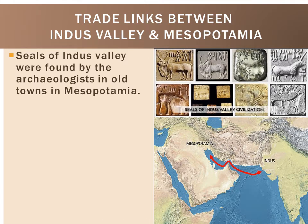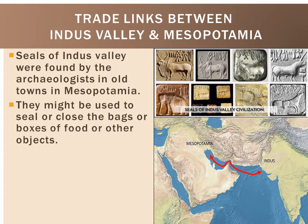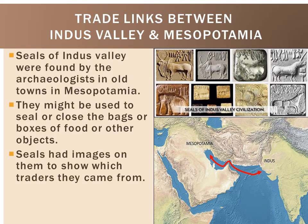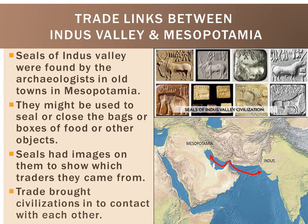Here you can see seals found by archaeologists in old towns in Mesopotamia. These seals were used to close the bags or boxes of food or other objects. The seals had certain images on them — there are about eight seals here from the Indus Valley. These images identified which trader the goods came from.